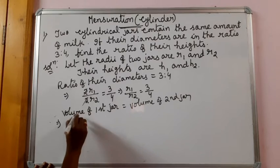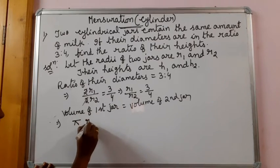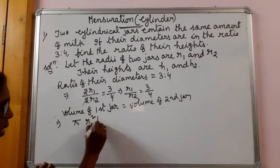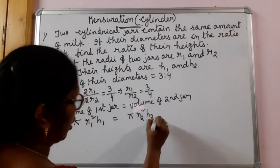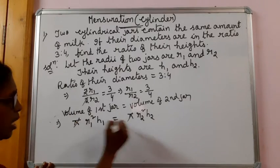We know the formula for finding volume of a cylindrical jar, pi R1 square H1. Second is pi R2 square H2. Both the sides pi pi cancel.